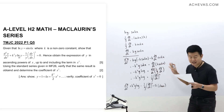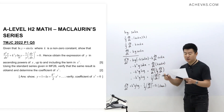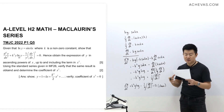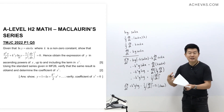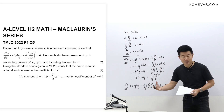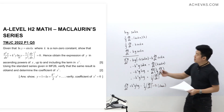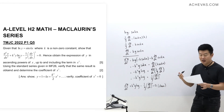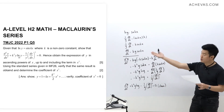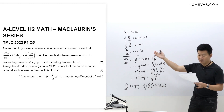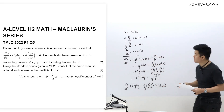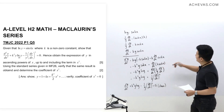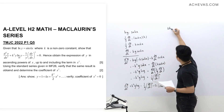That completes the differentiation technique part. The question then says 'hence, obtain an expression for y in ascending powers of x.' This hints that we need to use Maclaurin's series, because through Maclaurin's we can express any function as an infinite polynomial in ascending powers of x.